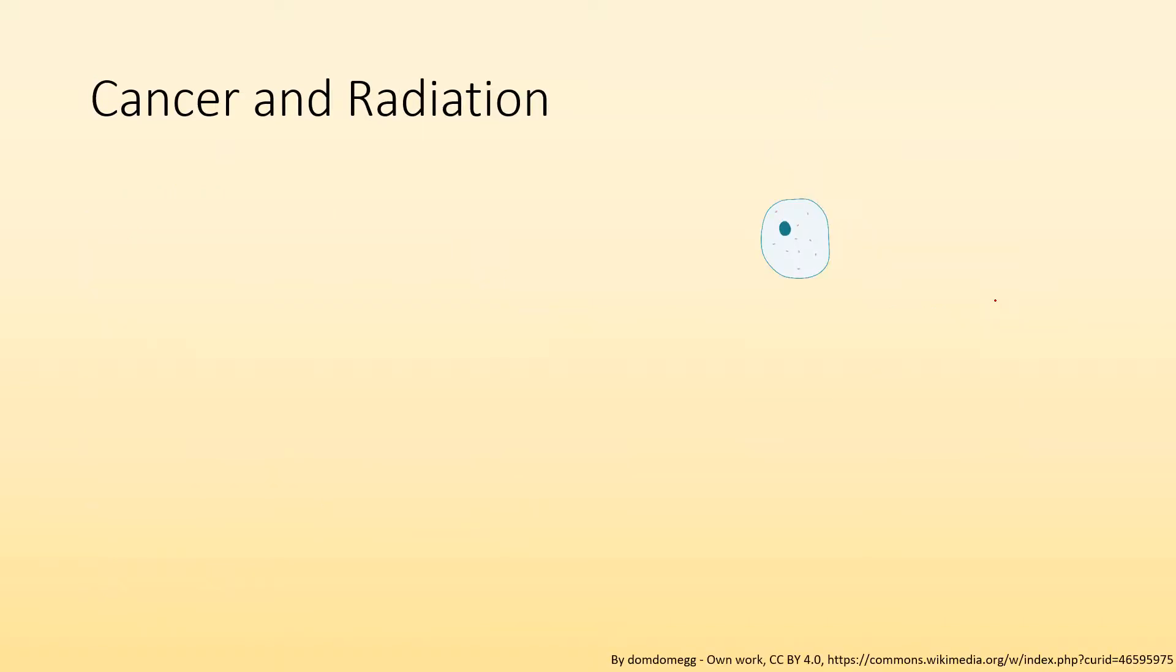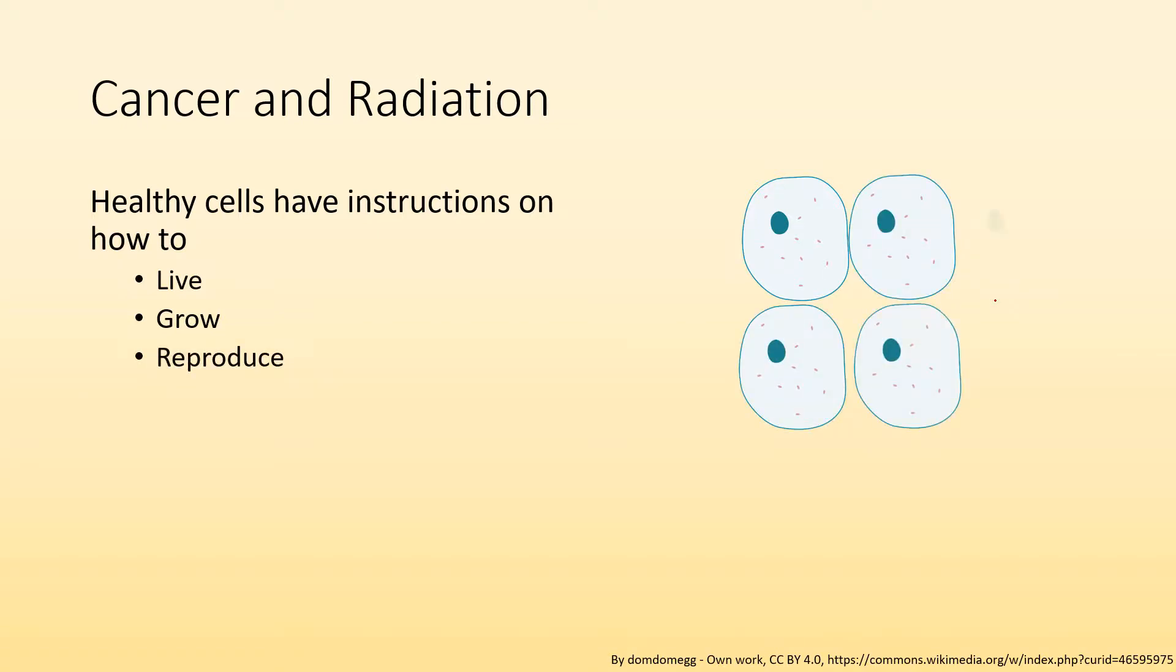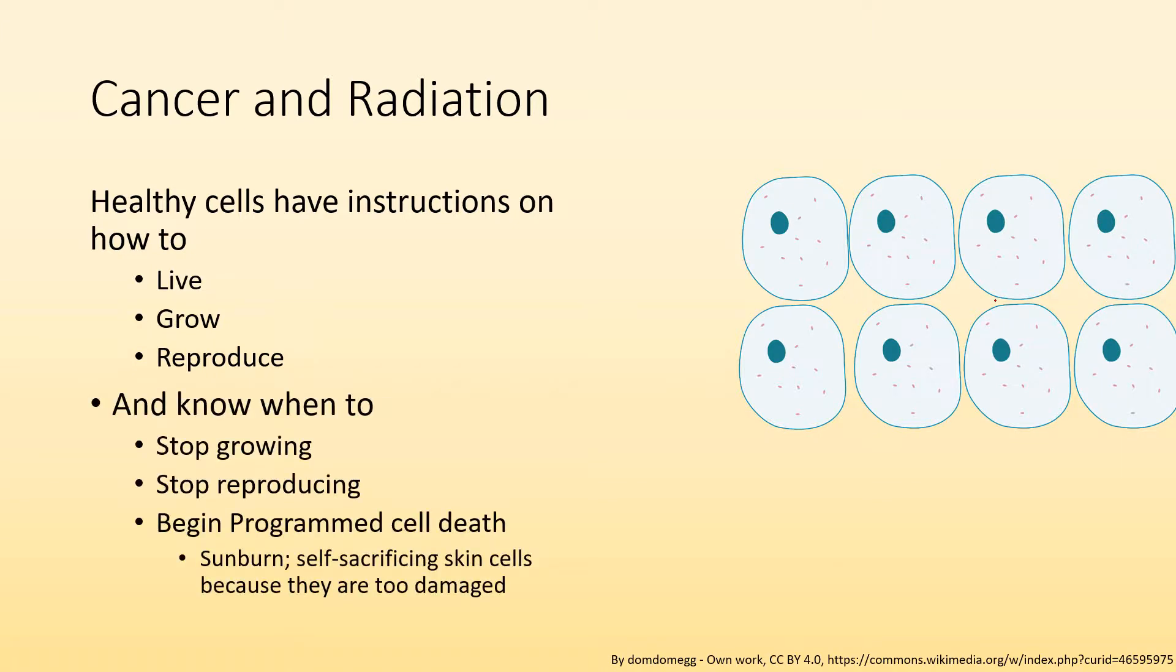So I want to talk about cancer and radiation because we know there's a link between those. Let's start with healthy cells. Healthy cells have instructions on how to live and how to grow. So here's a cell growing, living, growing. They also have instructions on how to reproduce. So here's the cell reproducing. Eventually it stops. These cells also know when to stop growing and to stop reproducing. And there's also programmed cell death, apoptosis.